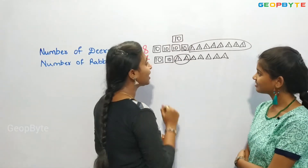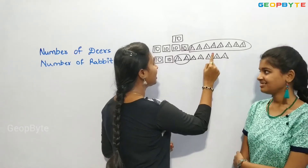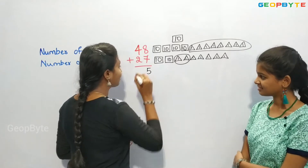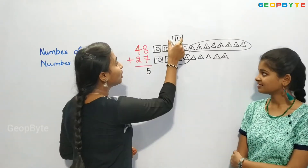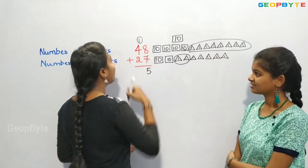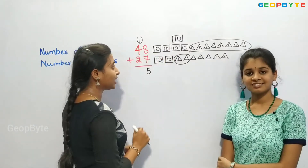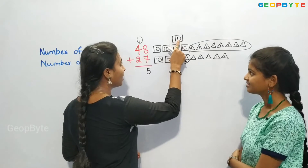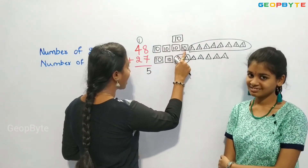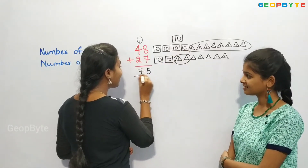Now, how many 1-cards are remaining? 1, 2, 3, 4, 5 — let us write 5 in the ones place. We got a new 10-card, so let us write 1 in the tens place. Counting all tens: 1, 2, 3, 4, 5, 6, 7 — let us write 7 in the tens place.